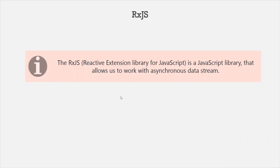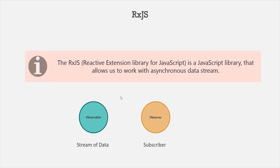Now, RxJS has two main players: the observable, which is the stream of data, and the observer, which is going to use that data. In order to make the observer use the data emitted by the observable, the observer has to subscribe to that observable. So we can also say that an observer is the subscriber of that observable. Let's go ahead and create a simple observable to understand how it works.